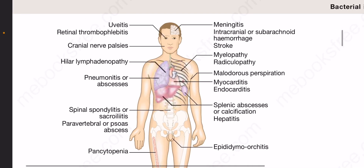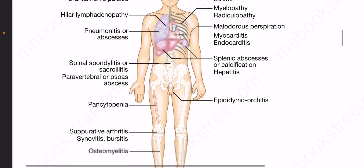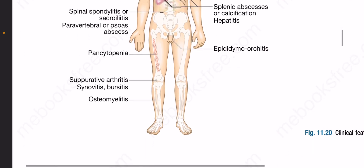The clinical features of brucellosis include: uveitis, retinal thrombophlebitis, cranial nerve palsies, hilar lymphadenopathy, pneumonitis or abscesses, spinal spondylitis or sacroiliitis, periglandular lymphadenopathy, paravertebral or psoas abscess, pancytopenia, meningitis, intracranial or subarachnoid hemorrhage, stroke, myelopathy, radiculopathy, malodorous perspiration, myocarditis, endocarditis, splenic abscesses or calcification, hepatitis, epididymo-orchitis, suppurative arthritis, synovitis, bursitis, and osteomyelitis.